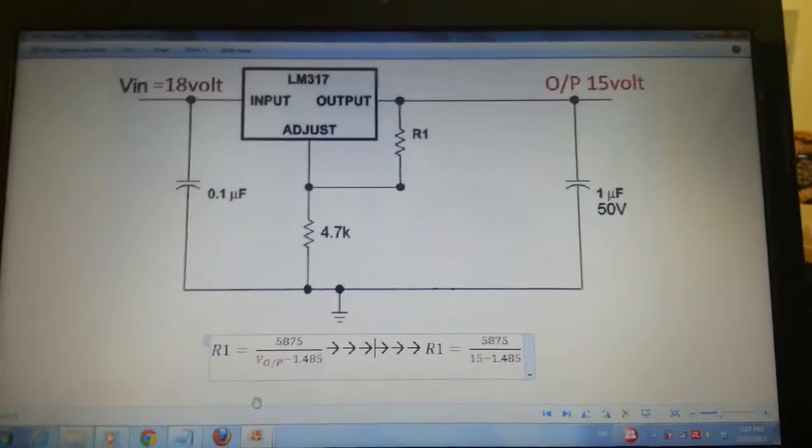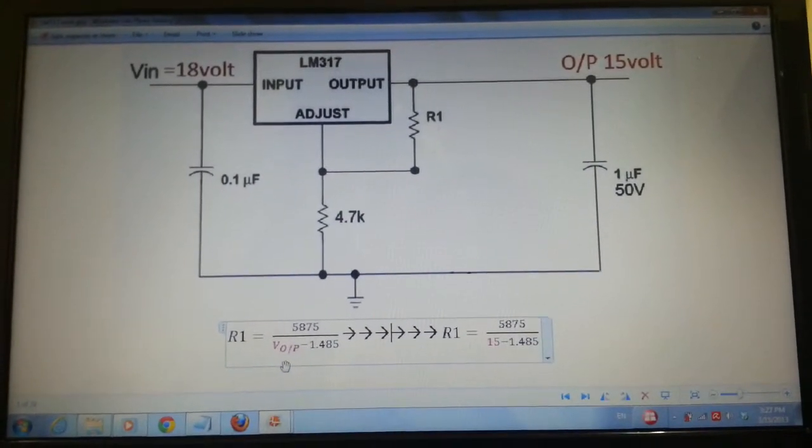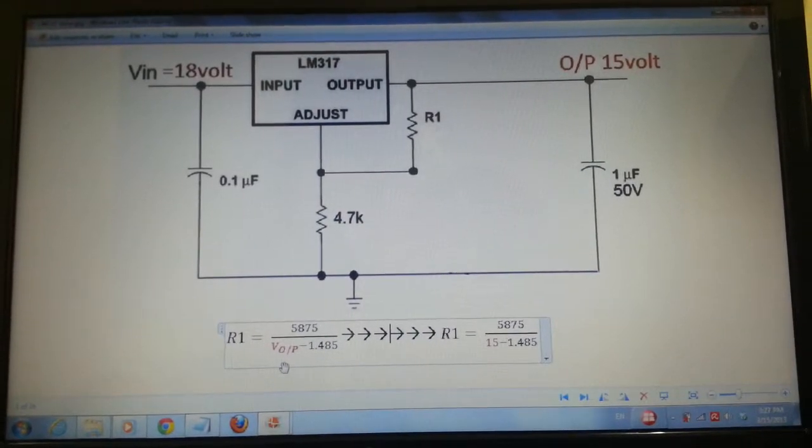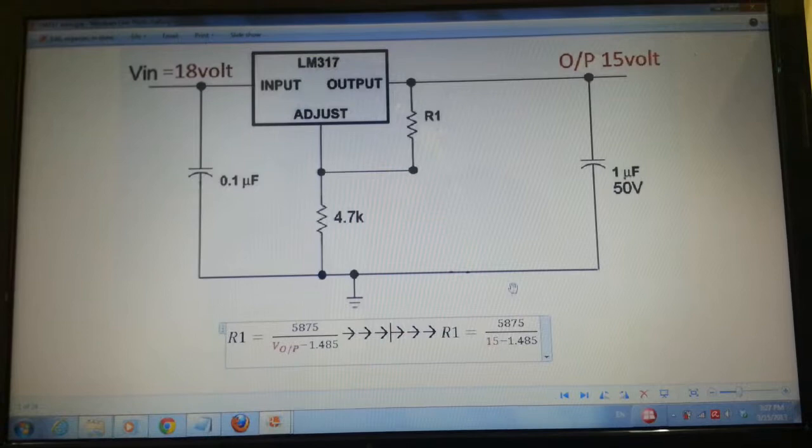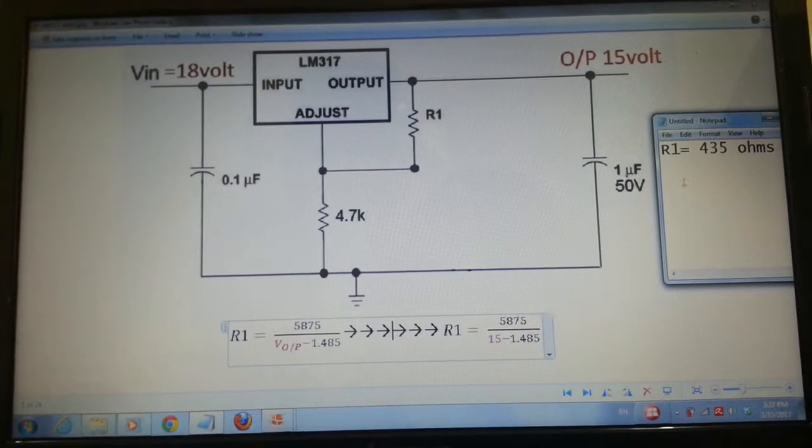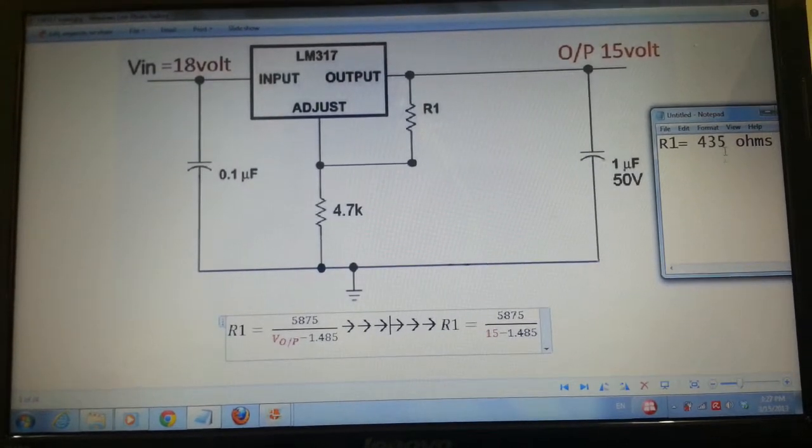All I need to do is input my desired output voltage into the equation, and I get R1. As you can see here, I calculated it and R1 is 435 ohms.